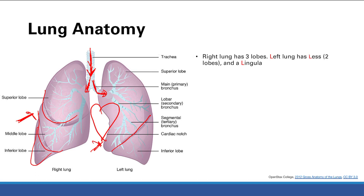Which lobe will it be? That depends on the position of the patient. If the patient is upright or supine, the foreign body is most likely going to end up in the lower lobe — gravity forces it down to the inferior lobe. However, if you're lying on the right side, the object usually settles in the upper lobe. So: upright or supine means the right lower lobe; lying on the right side means the upper lobe.